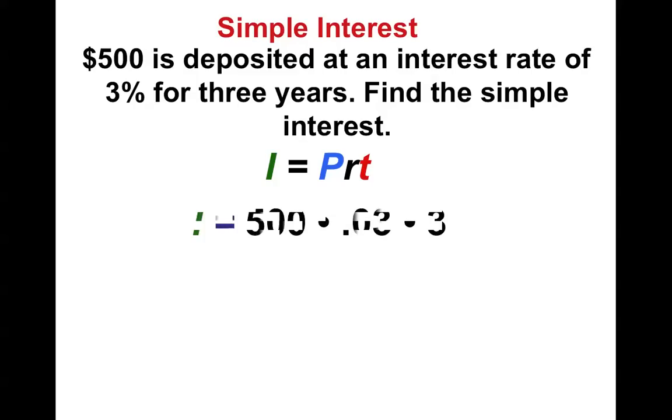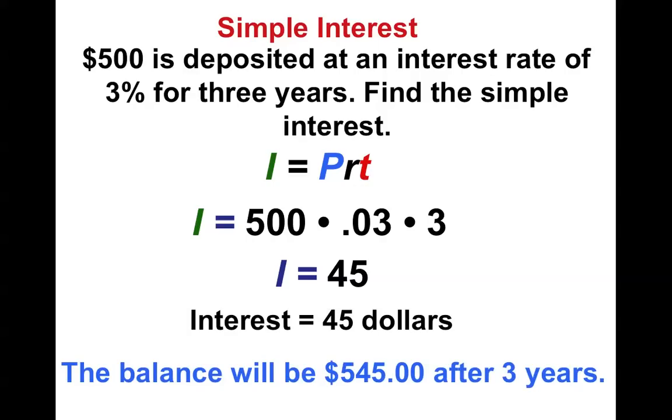Step 1, formula. And notice what I plug in. $500 is the principle, that's the amount of money that I deposited. The rate is 3%, or 0.03 as a decimal, and then the time was 3 years. When I multiply these together I get 45. That means that I will earn $45 and the balance will be $545 after 3 years. And that's how you do it.